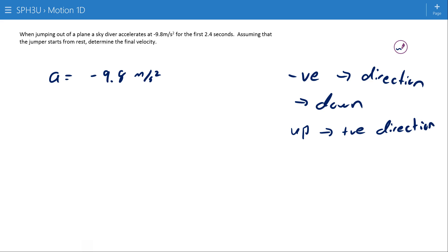Assuming that the jumper starts from rest... Oh, it said that the time was 2.4 seconds. What is their final velocity?